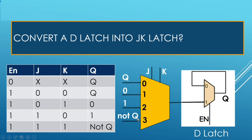I have considered a 4-to-1 MUX, which has two select lines. I have applied the value of J and K to both the select lines. As per the truth table, when J and K both are 0, output should latch its previous value Q. So when J and K both are 0, line number 0 is going to path to its output.